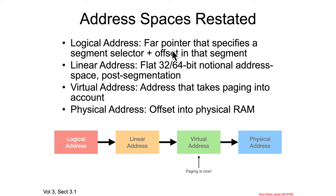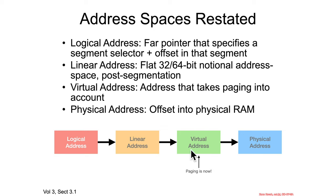Logical addresses were those far pointers that had a segment selector and an offset. Linear addresses was some notional flat 64-bit space for purposes of this class, post-segmentation. Virtual addresses are linear addresses that take paging into account, and virtual addresses will translate through to physical addresses, which are some offset into physical RAM.